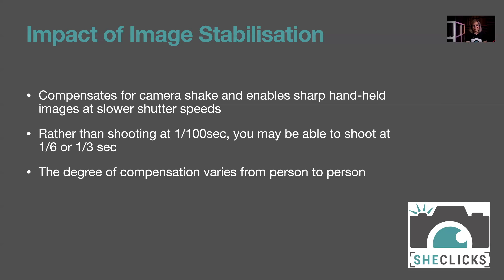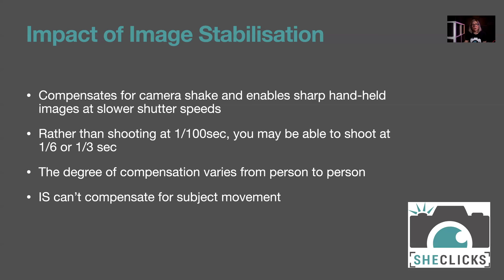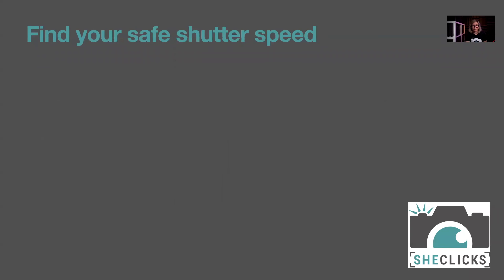Image stabilization — whether in-camera, in-lens, or a combination — cannot compensate for a moving subject. If light levels are dropping and you need a faster shutter speed to freeze your subject, image stabilization doesn't help with that. To find your safe hand-holding shutter speed there's an easy method that just takes a little time.